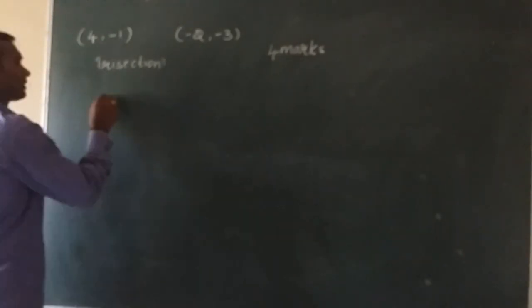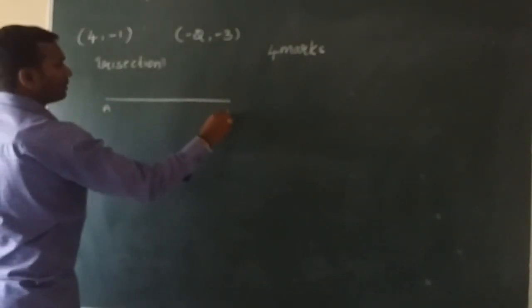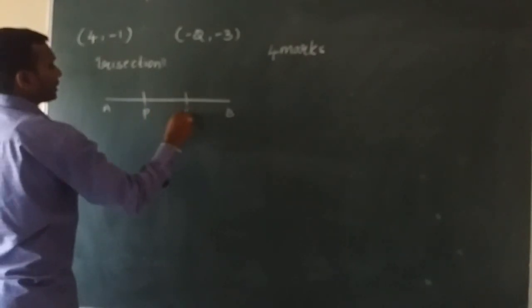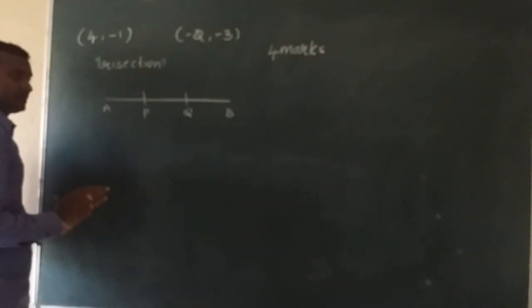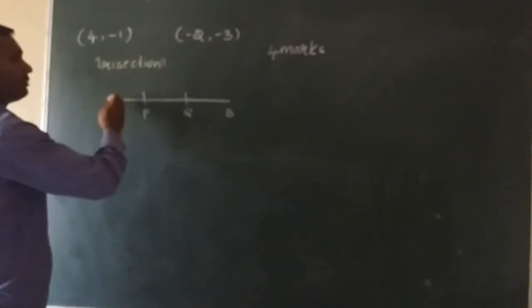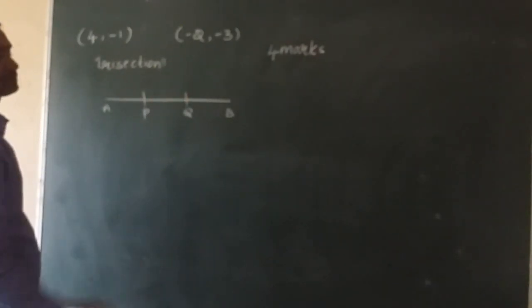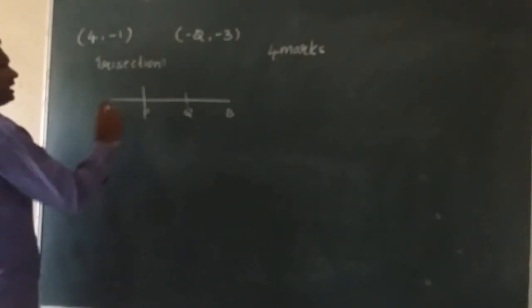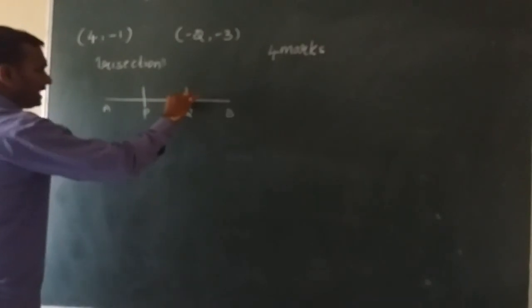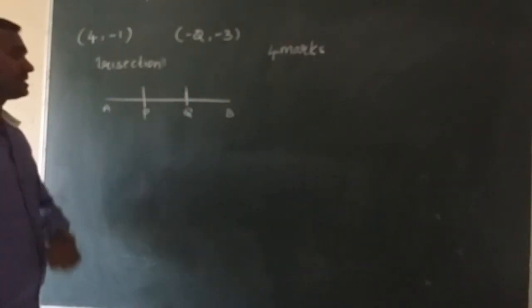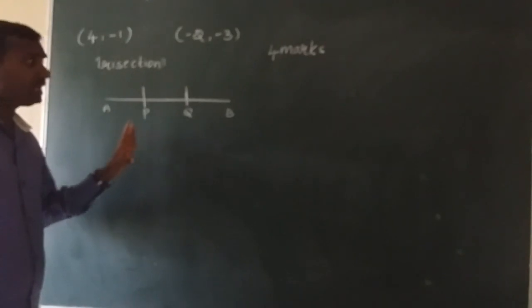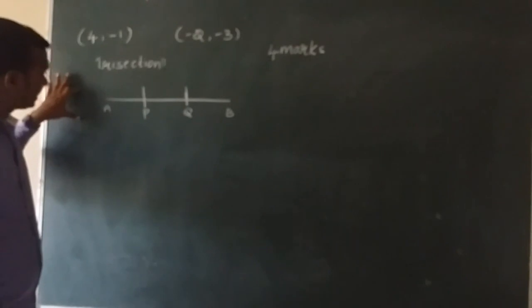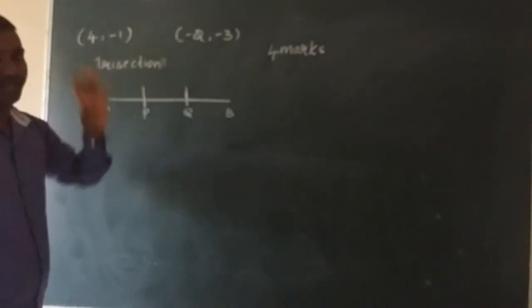For example, AB is a line segment. Take 2 points P and Q such that P and Q divide the line segment AB into 3 equal parts.